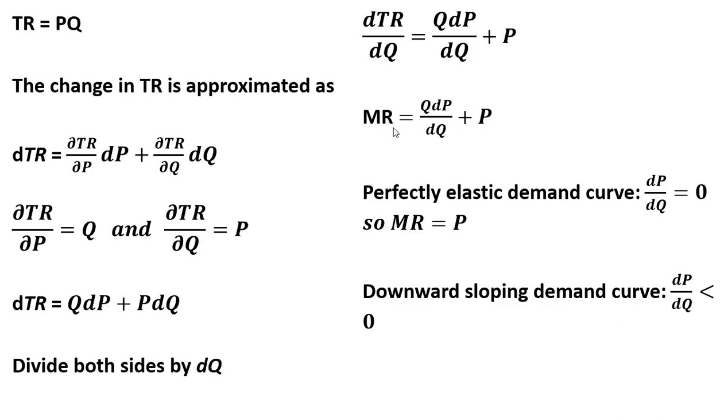So what is marginal revenue? Marginal revenue is price minus something. So since dP/dQ is a negative number, we're going to be taking away from price. So marginal revenue will be less than price. And that's our proof. I hope you found this video helpful.